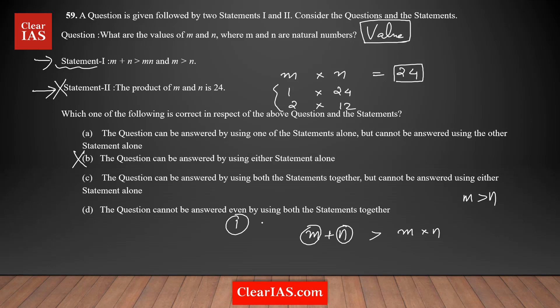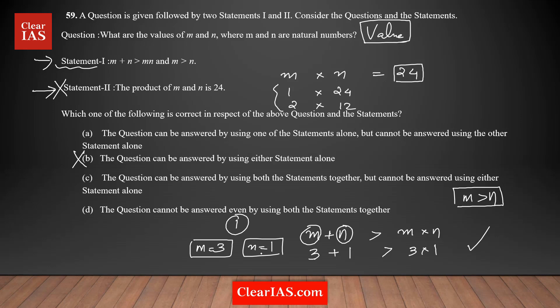If the sum is greater than the product, that's possible when one of the numbers is 1. Let me pick n = 1 and m = 3. Then 3 + 1 = 4 is greater than 3 × 1 = 3 — true. So m = 3, n = 1 works. But try m = 5, n = 1: 5 + 1 = 6 is greater than 5 × 1 = 5 — also true. So m = 5, n = 1 also works. Multiple values are possible.